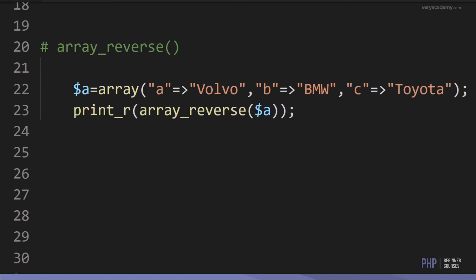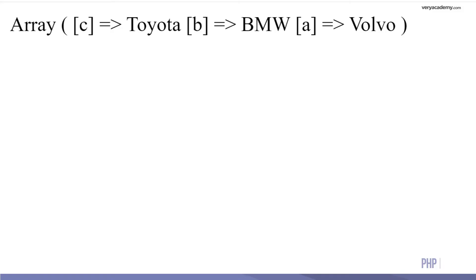The array_reverse function simply reverses the items in the array. Here we have Volvo, BMW, and Toyota — and after reversing, you can see they are now in reverse order.